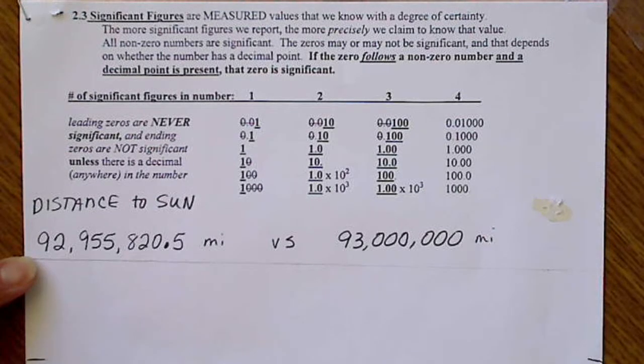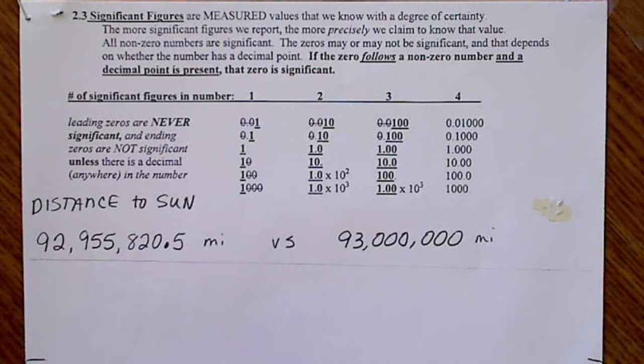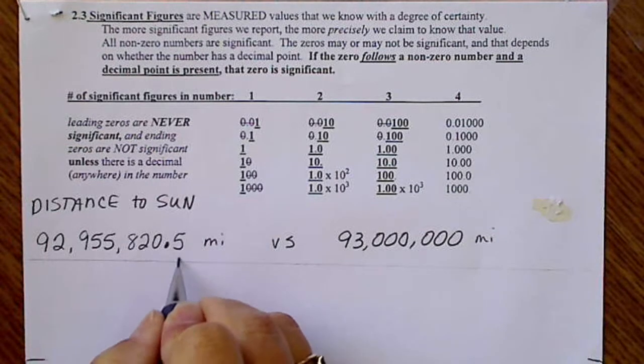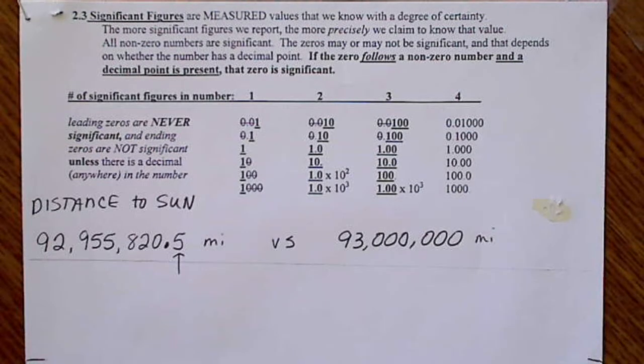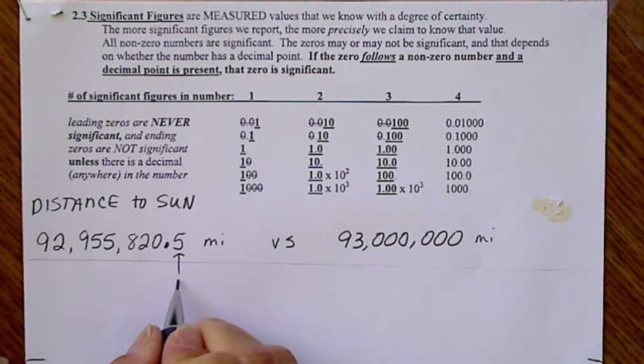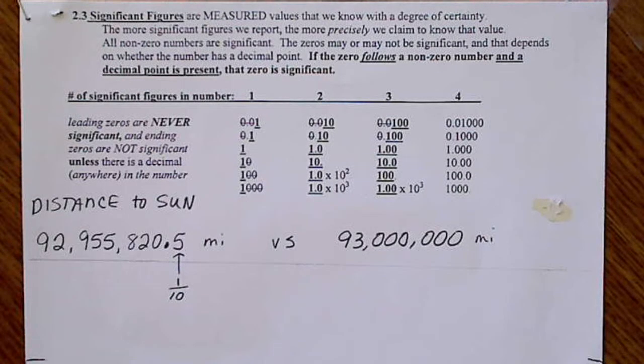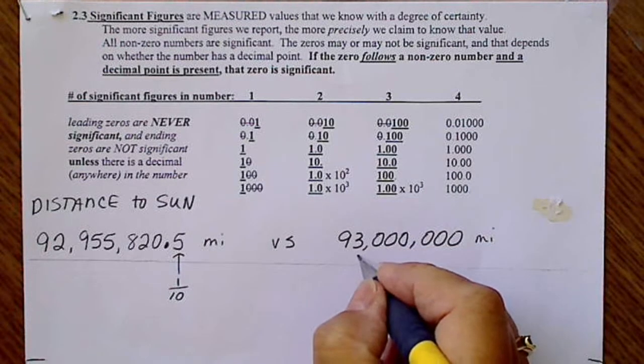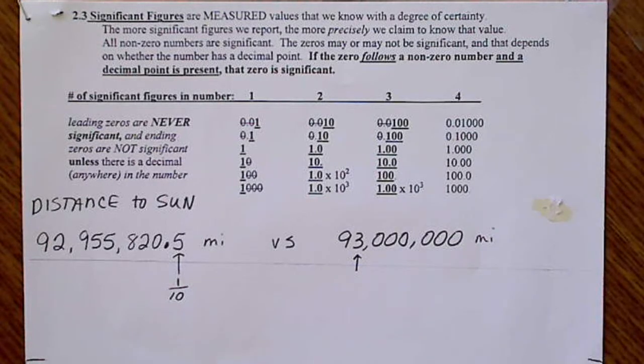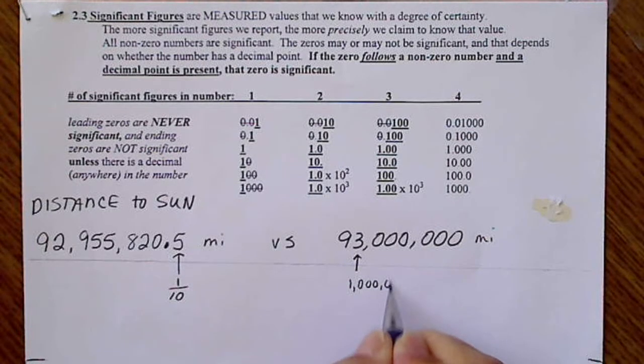So this number is 92,955,820.5 miles. This value tells us with certainty the distance to the sun down to the one-tenths place. Whereas this number tells us the distance to the sun with certainty in the one-millions place.